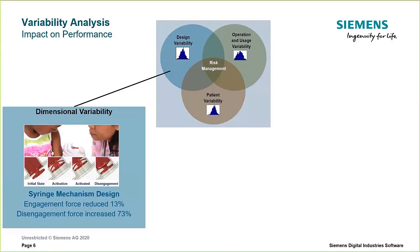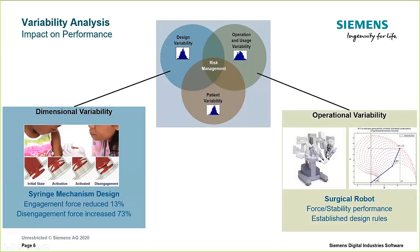You also have operational variability — how a device performs under different use conditions. In one example, a surgical robot was designed to operate within a defined operating envelope, yet in practice clinicians used it in ways where the manufacturer could not warrant the safety and stability of the setup. Simulation can be used to simulate device response across different ranges of use, including off-design scenarios. Operational variability is also one of the reasons that human factors testing is required as part of your regulatory filing.